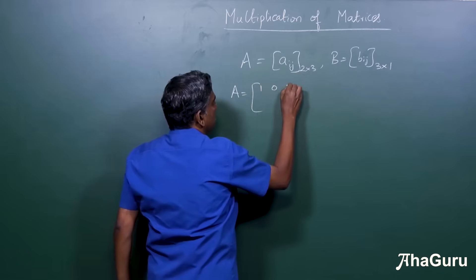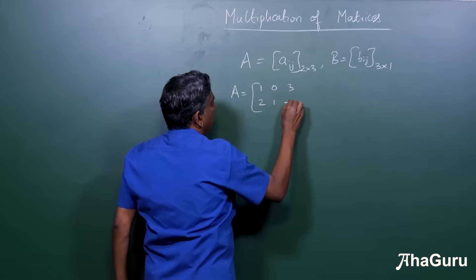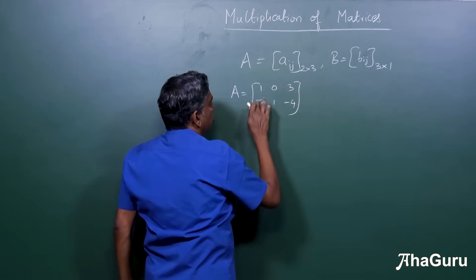1, 0, 3, 2, 1, minus 4. Two rows, three columns.